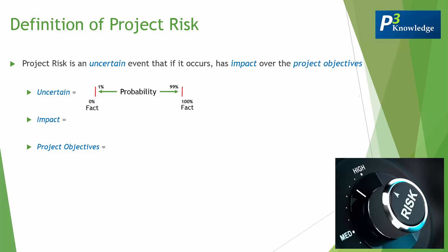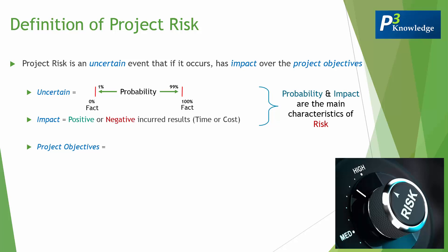The second word is 'impact,' and here we're talking about positive or negative incurred results. Normally those results are measured either by time or cost. As we can see from those two words — probability and impact — those are considered the two main characteristics of risks. Bear in mind, there are many other characteristics such as proximity, frequency, detectability, etc., but here we're going to focus on probability and impact.